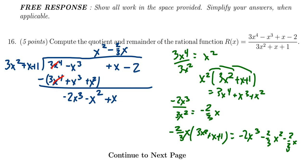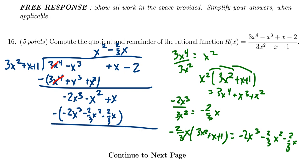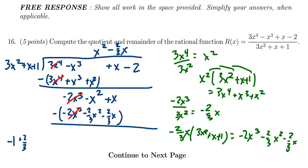We record that below: negative 2x cubed minus 2/3 x squared minus 2/3 x, and subtract from above. The first term cancels perfectly. For the x squared coefficient, we have negative 1 minus (negative 2/3), which is negative 3/3 plus 2/3, giving negative 1/3. That's the coefficient of x squared, so we record negative 1/3 x squared.